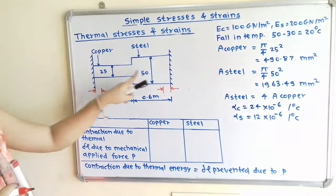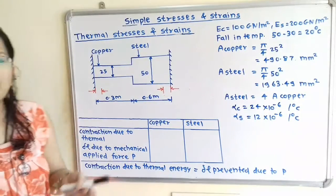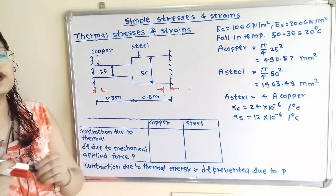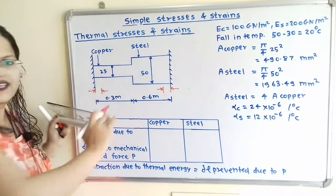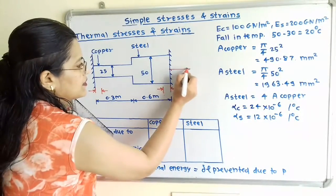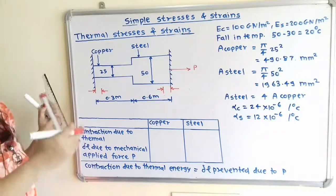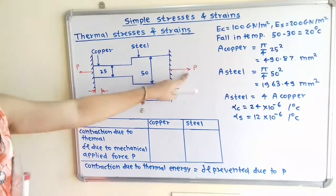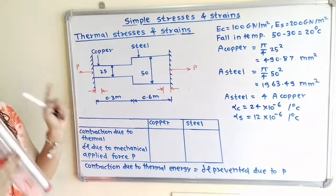The condition is that this composite bar is held between two fixed supports. These fixed supports apply force in the opposite direction to prevent the contraction. For the steel material, contraction is taking place on the left hand side, so the applied force is towards the right hand side with magnitude P. For the copper material, contraction is towards the right hand side, so the applied force is in the opposite direction with magnitude P. This force P has equal magnitude but opposite direction, and this type of force is tensile force.